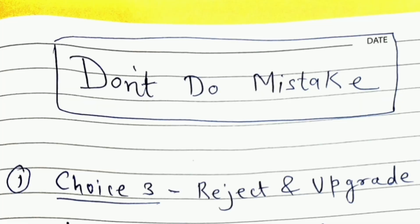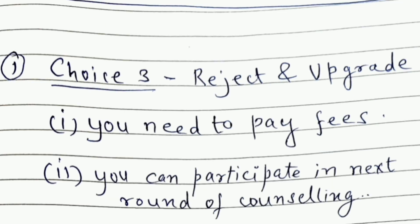Don't make these mistakes — this is a very different thing. Choice 3 is basically reject and upgrade. Choice 3 students first need to pay the fees, just like Choice 2 students. The total fees will be shown in your allotment. Even if you don't like the college and are rejecting it, you still need to pay the fees. That is the common key rule.